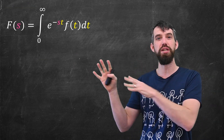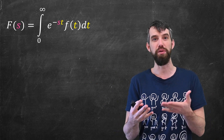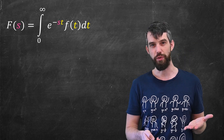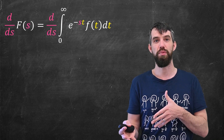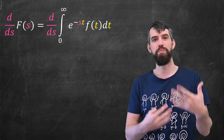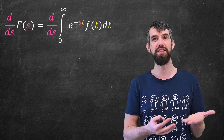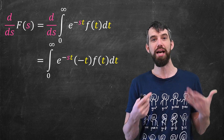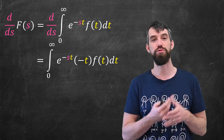Let me begin with the definition of the Laplace transform. Here, capital F of s is the Laplace transform of little f of t, defined by this particular improper integral. Now I want to try taking the derivative of this with respect to s on both sides. On the left I just get F prime, but on the right this is an integral with respect to t, so the derivative with respect to s can come inside the integral. The only spot where s appears is in the exponential, so bringing that d/ds in takes the derivative of e to the minus st, which brings out a factor of minus t.